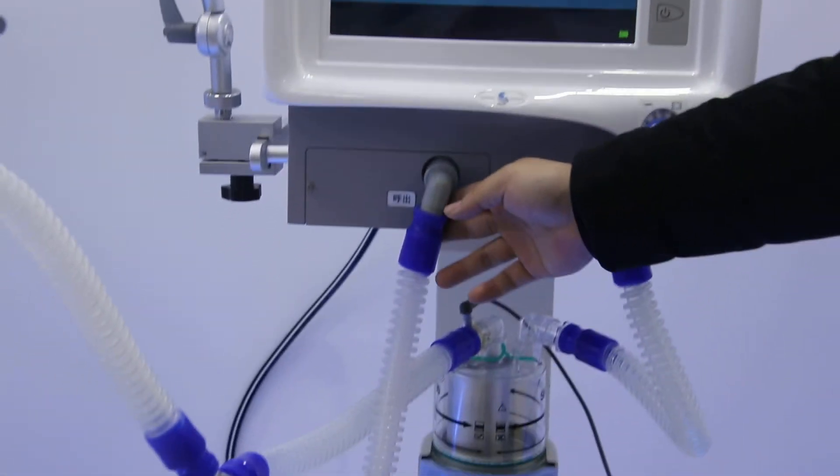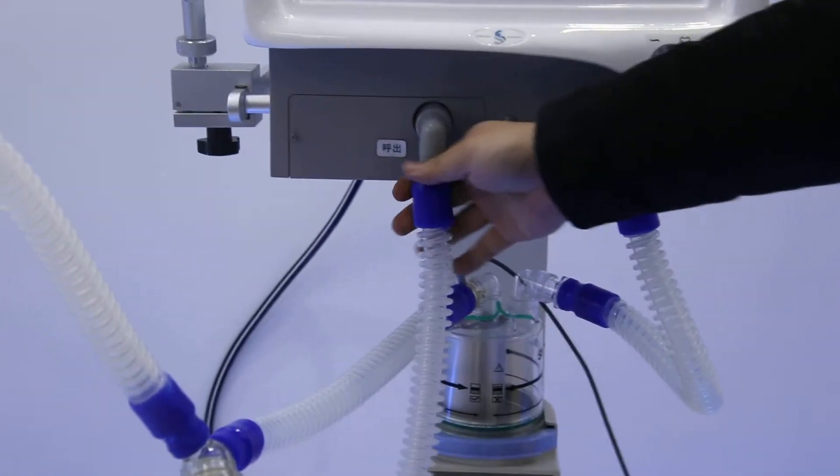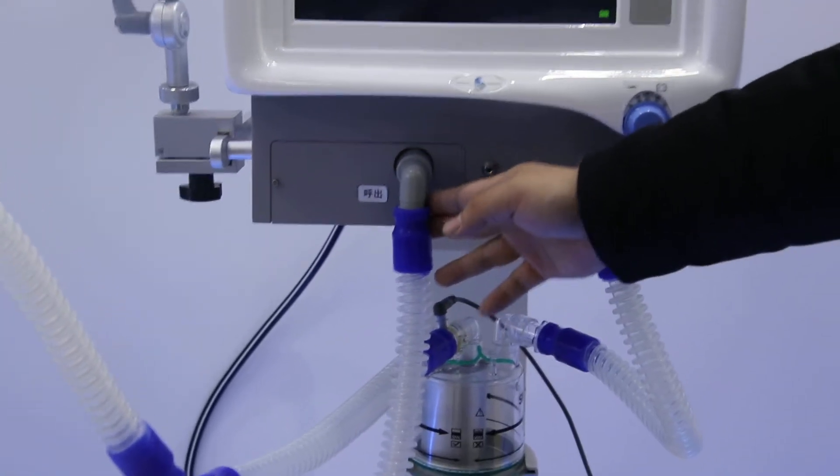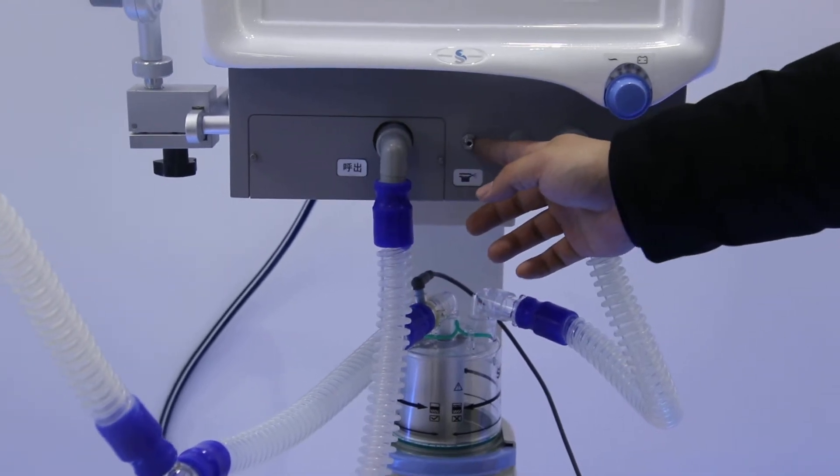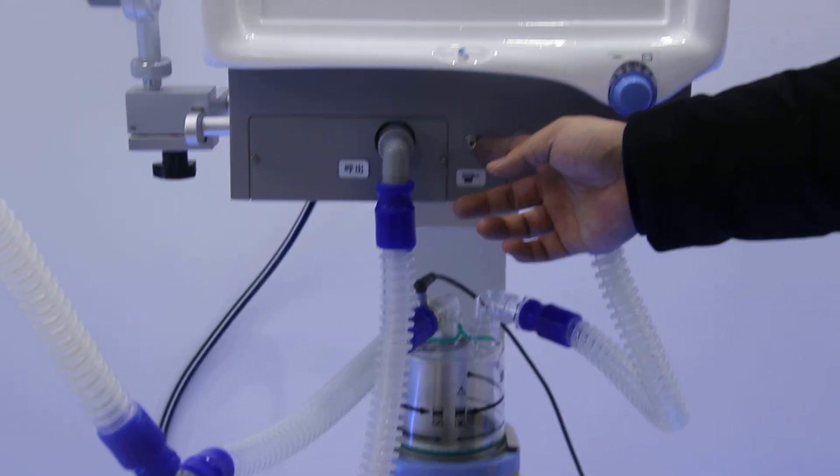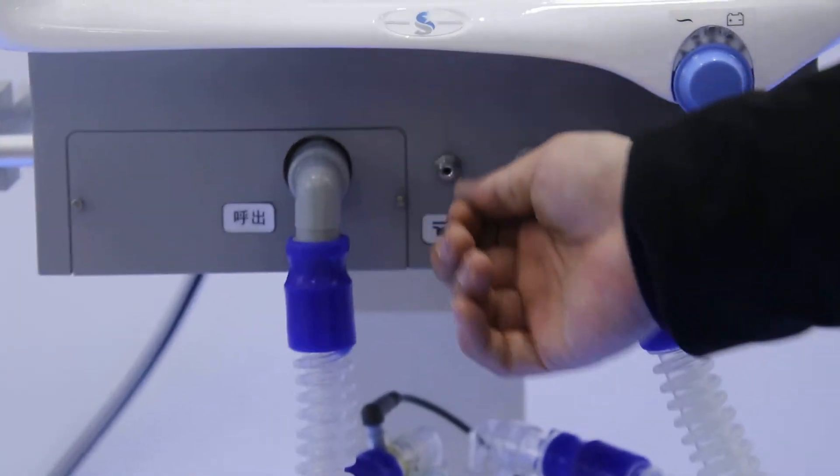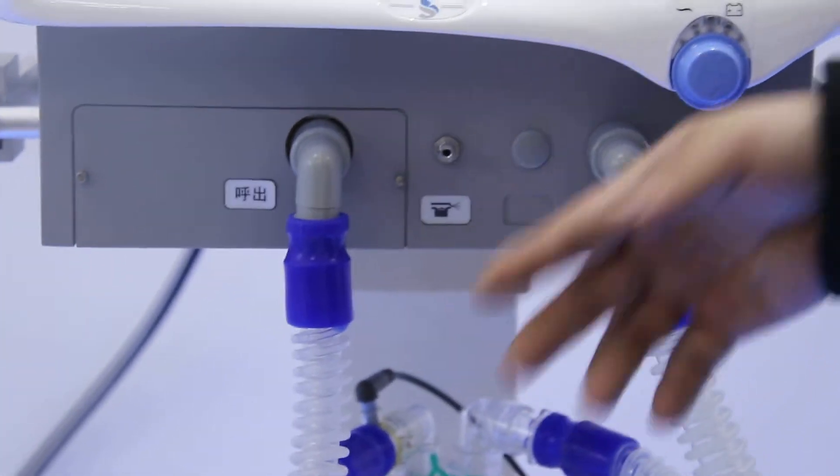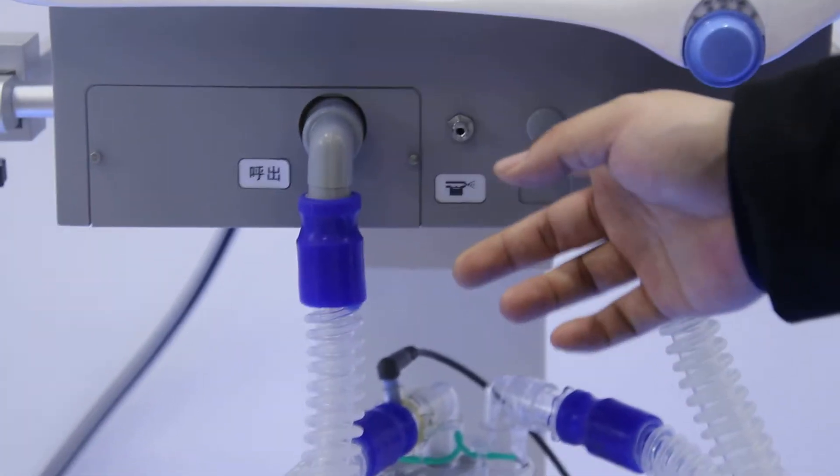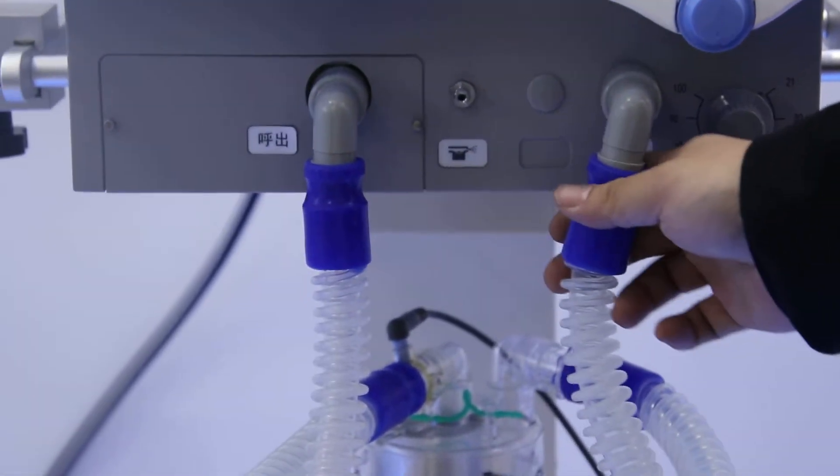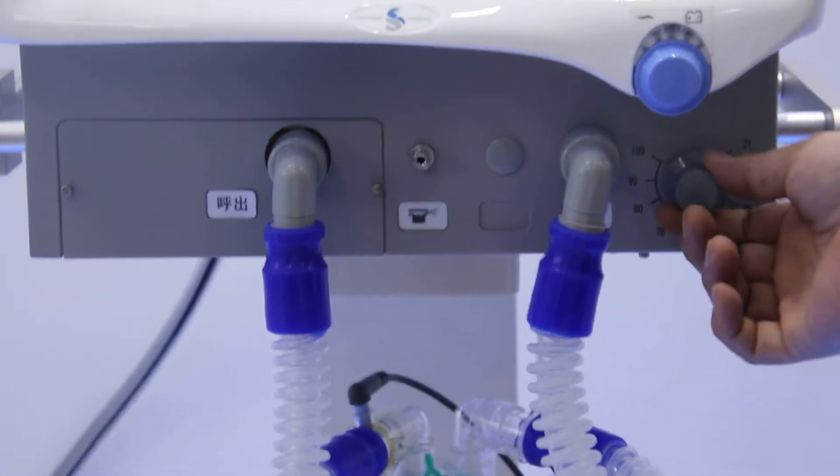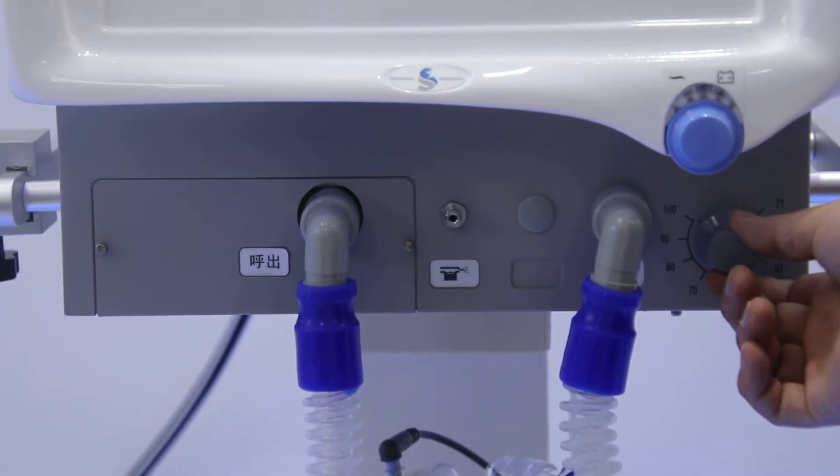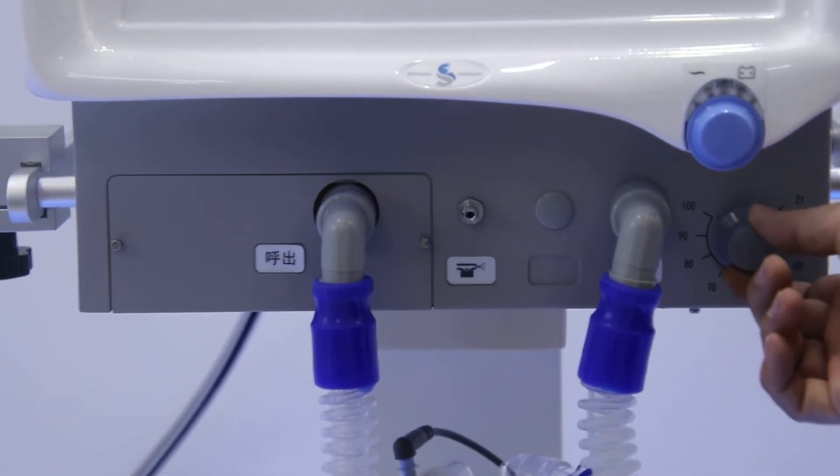And here you can see for this machine, we have totally four ports. The first one here is the expiration port. And this one is for the nebulizer. Once we need to use this function, we need to connect with a small pipe. And this one is for reserve. Later if the customer needs the ETCO2, then we will make this port. And the fourth part here is for the inspiration port. And this rotary button is for changing and adjusting the oxygen concentration from 21% to 100%.